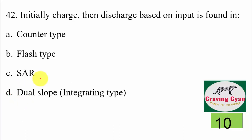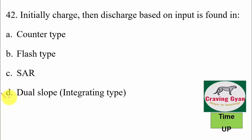42nd question: initially we charge, then based on the input the value gets discharged — this mechanism is found in which ADC type? Counter type, flash type, SAR, or dual slope? This mechanism is found in dual slope. Hence option D is correct.